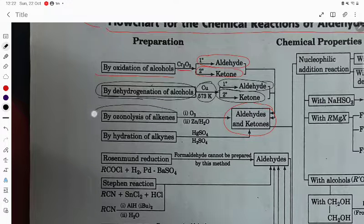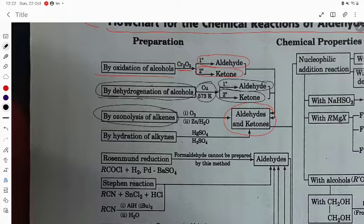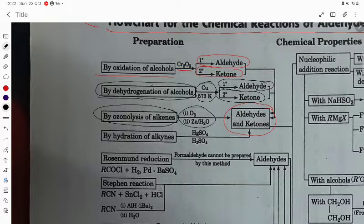By ozonolysis, different alkenes on ozonolysis give different aldehydes and ketones. First you take O3, then zinc and water.